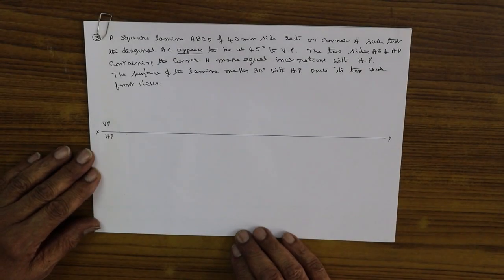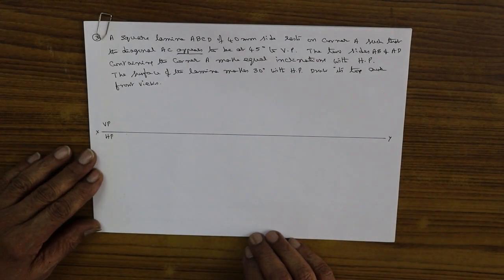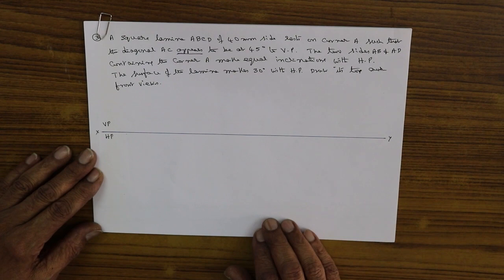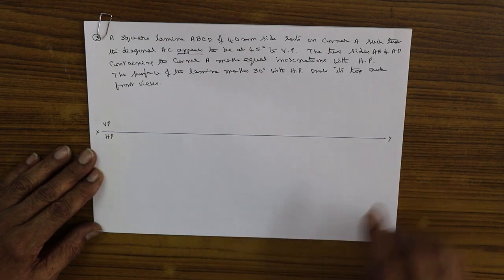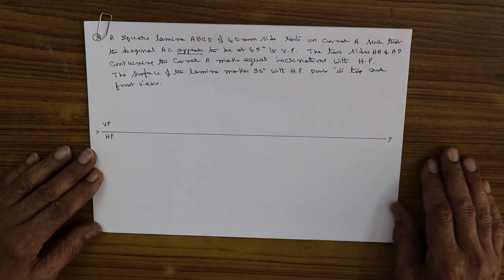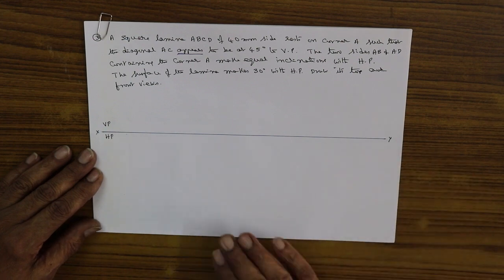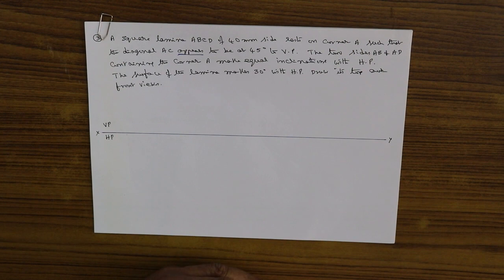We will proceed with problem number 3, which is a square laminar ABCD of 40 mm side resting on corner A such that the diagonal AC appears to be inclined at 45° to VP. The two sides AB and AD containing the corner A make equal inclinations with HP.